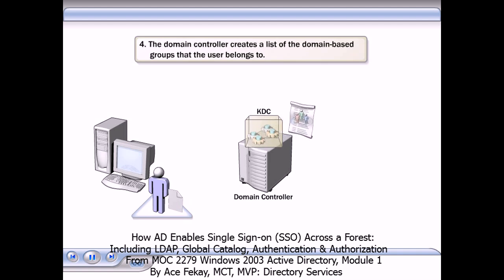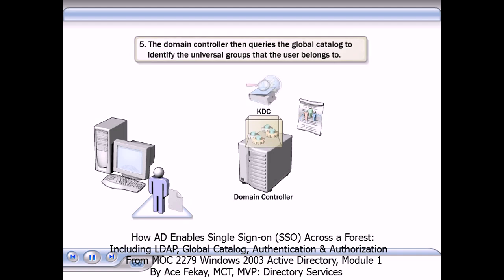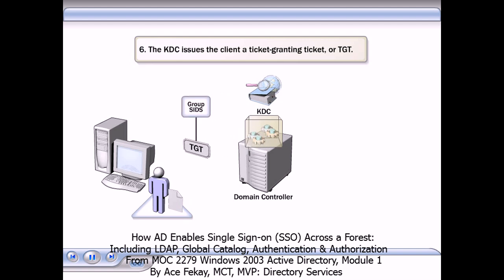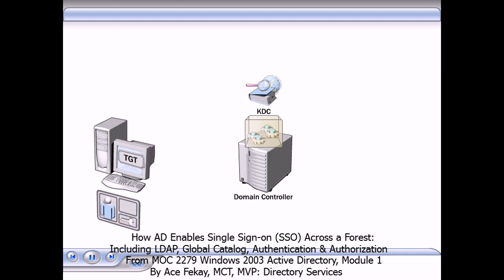The domain controller creates a list of the domain-based groups that the user belongs to. The domain controller then queries the global catalog to identify the universal groups that the user belongs to. The KDC issues the client a TGT, or Ticket-Granting Ticket, which contains the encrypted SIDs, or security identifiers, for the groups that the user is a member of. The user is now authenticated and can request access to resources.